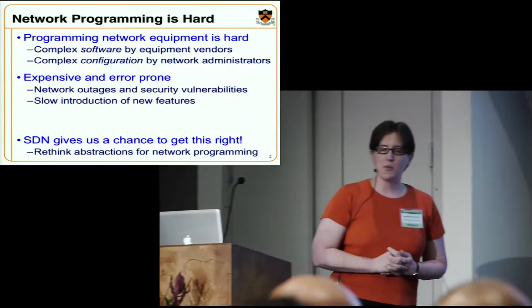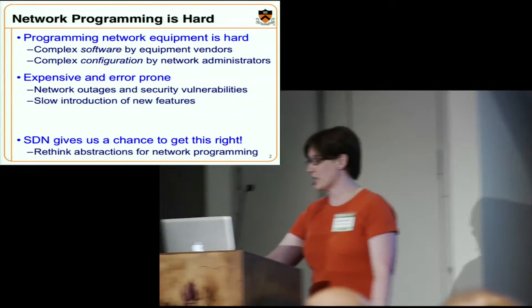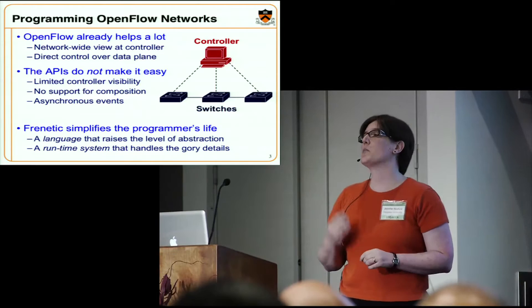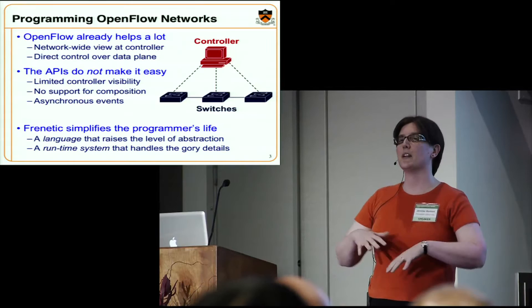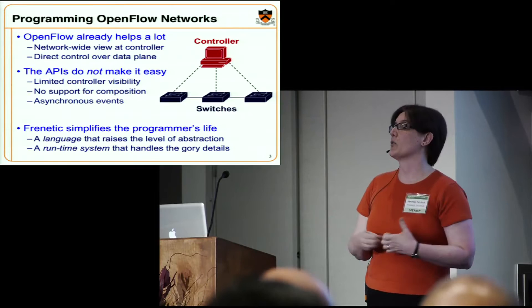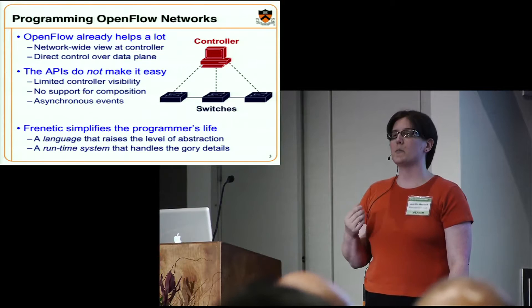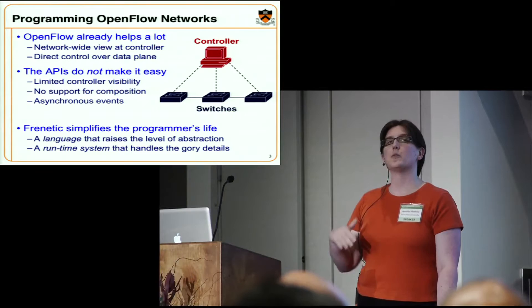Software-defined networking really gives us an opportunity to get this right — to figure out how we should be programming our network infrastructure. It doesn't answer the question, but it creates the opportunity for us to answer it. Two things I really like about OpenFlow are network-wide visibility and direct control. OpenFlow provides both by giving us the abstraction of a controller on which we can combine information from multiple locations, and the ability to directly impact packet handling in the data plane. And importantly, it gives us the ability to innovate on top of the relatively low-level interface that today's controllers provide, which is what I'll talk most about today.